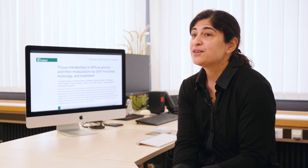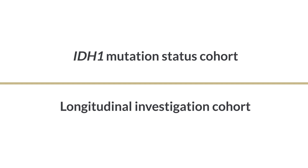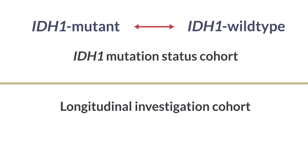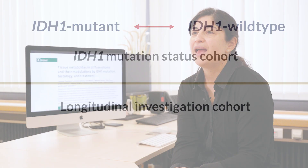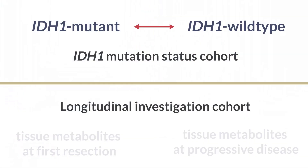Using this approach, we investigated 101 tissue samples from 73 glioma patients and created two different cohorts for comparing metabolite profiles: the IDH1 mutation cohort and the longitudinal investigation cohort. In the IDH1 mutation cohort, we compared metabolites in IDH1 mutant versus IDH1 wild-type tissue samples. In the longitudinal investigation cohort, we investigated tissue samples from patients who underwent several resections and compared tissue metabolites at first resection with tissue metabolites at progressive disease.